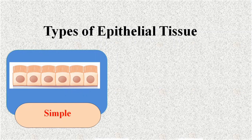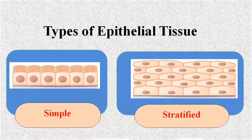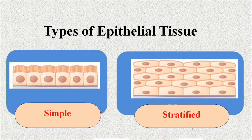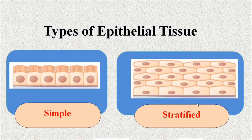When cells are arranged in more than one layer, they are known as stratified epithelial tissue. In stratified epithelium, cells are closely packed together in multiple layers. New cells originate from the base and push older cells upward; when mature, the older cells are removed from the upper side.